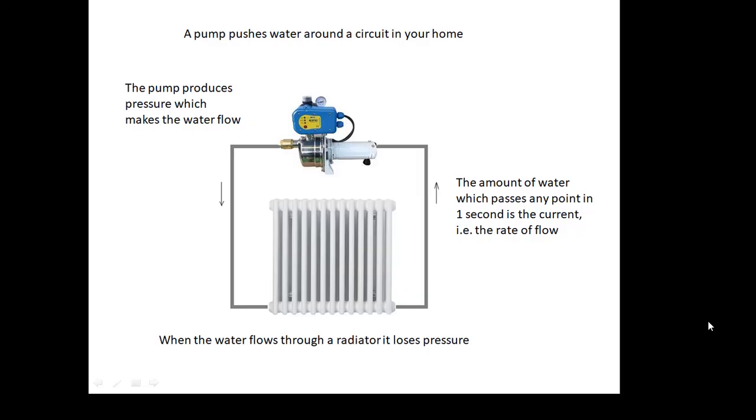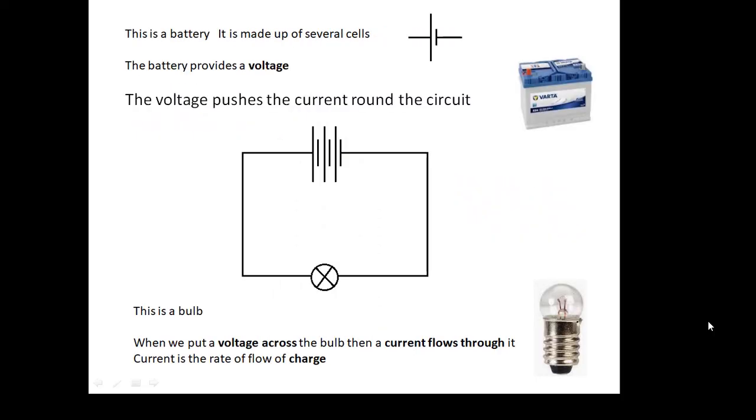Now, what's this got to do with electricity? Well, here's an electrical circuit. And the pump is the power supply, it's the battery. And the battery is made up of several cells. You'll notice here we've got one, two, three cells. And the battery provides a voltage. So the voltage is like the pressure. The voltage is pushing the current around the circuit. It's pushing charge around the circuit.